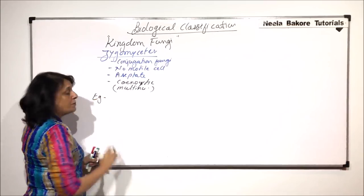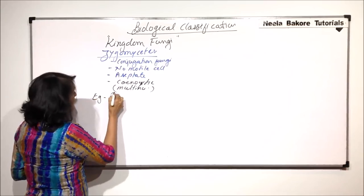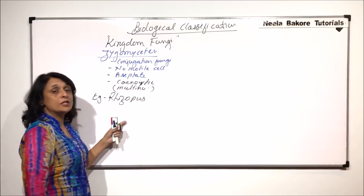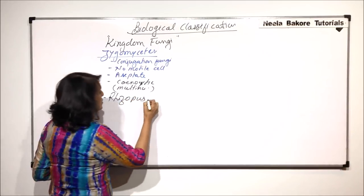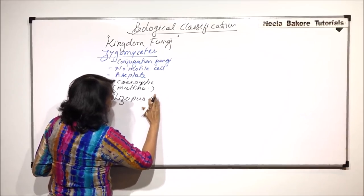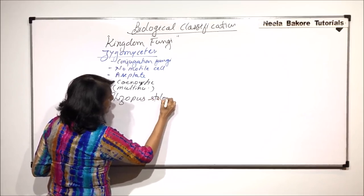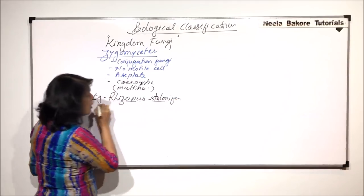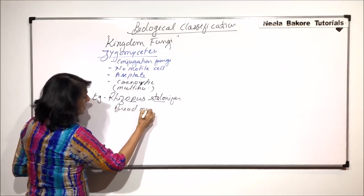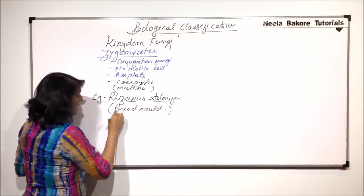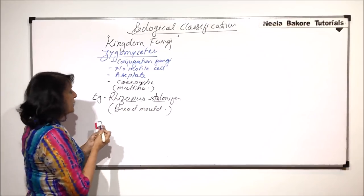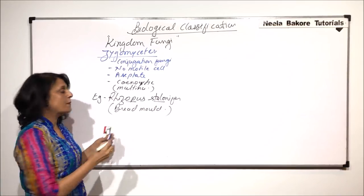In this group, we'll talk about the example which is the most common and that is known as Rhizopus. One species of Rhizopus which is called Rhizopus stolonifer is the most common one and it is known as bread mold. It grows on bread and that is why it is called bread mold.